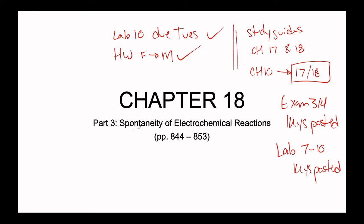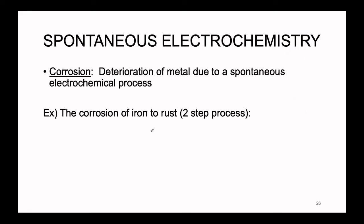We are going to finish off this chapter by talking about spontaneity once again — spontaneous electrochemistry. One such example of spontaneous electrochemistry is the process of corrosion: the deterioration of metal due to a spontaneous electrochemical process. The most famous example, which I've been using in kinetics and spontaneity previously, is iron turning to rust.